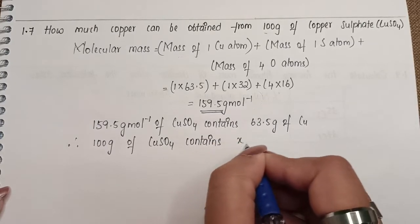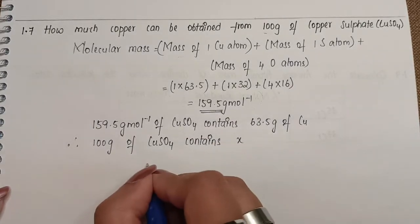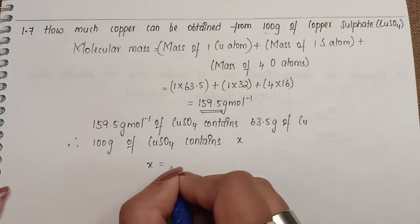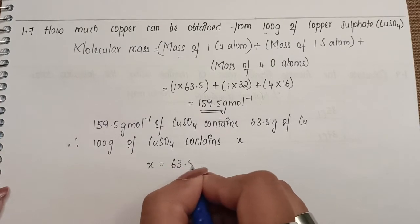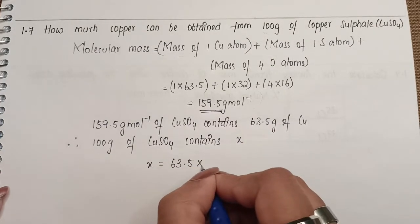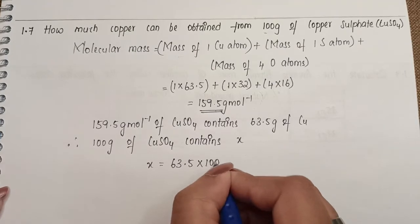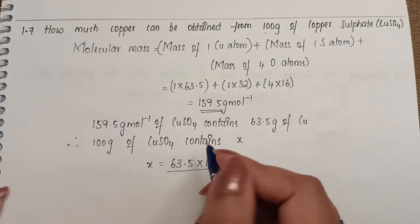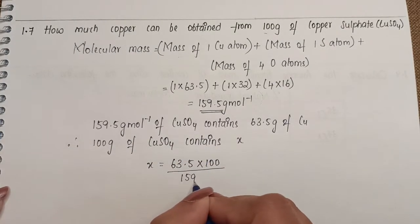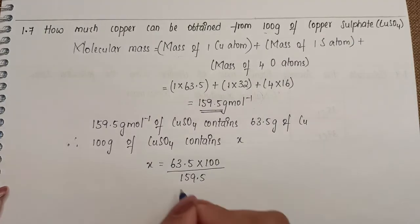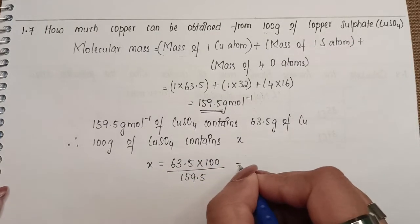By unitary method, when we do, we just have to cross multiply. So 63.5 times 100 divided by 159.5. When we solve this, your answer is going to be 39.89 grams.